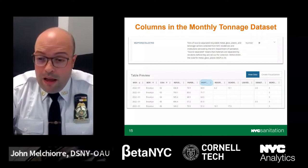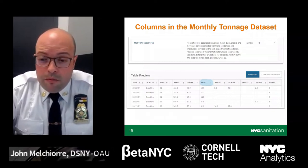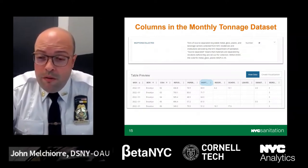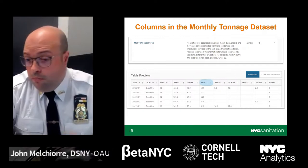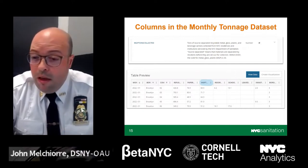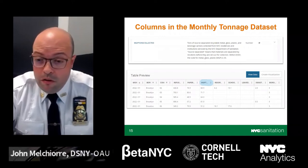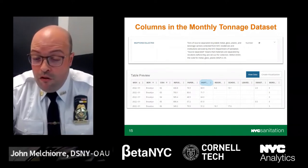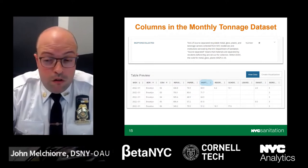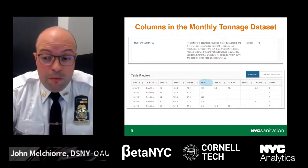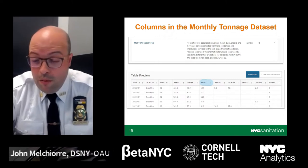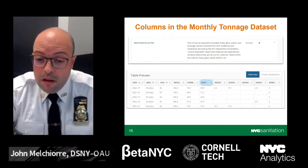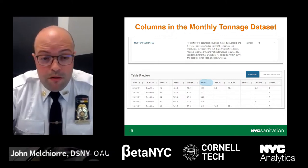The next column, highlighted in blue, shows the tons of source-separated recyclable materials — primarily metal, glass, plastic, and beverage cartons — collected from New York City residents and institutions. We call this category MGP for short. Source-separated means the material is separated by residents before being set curbside for collection. The code for MGP is 33.